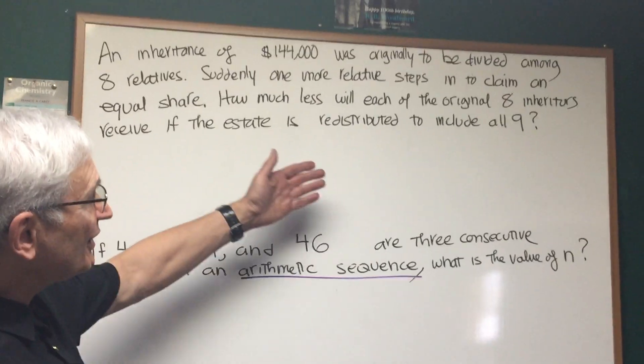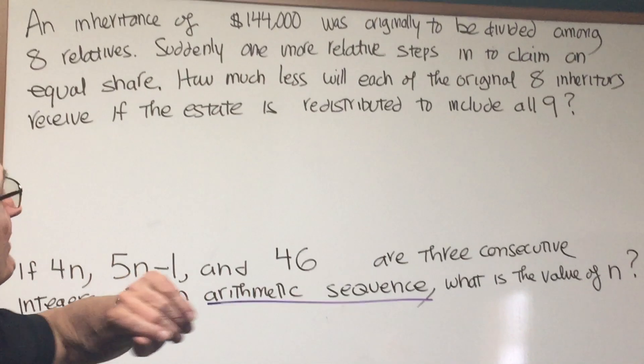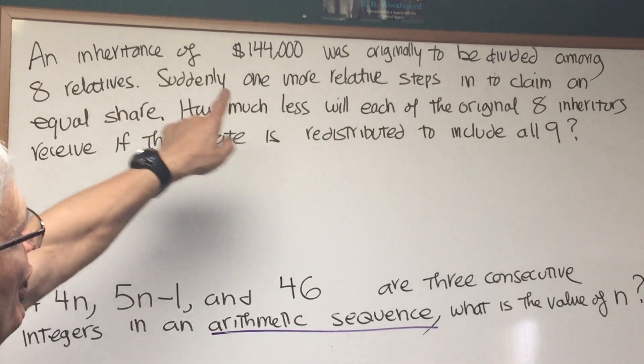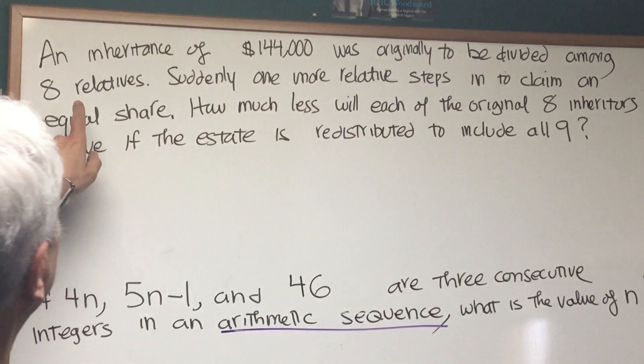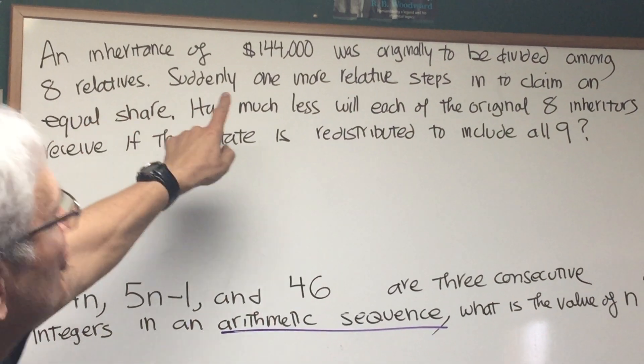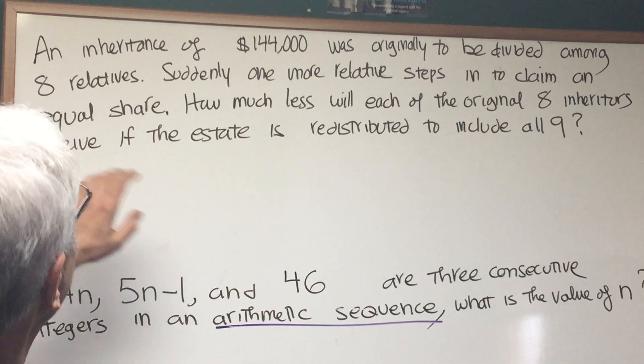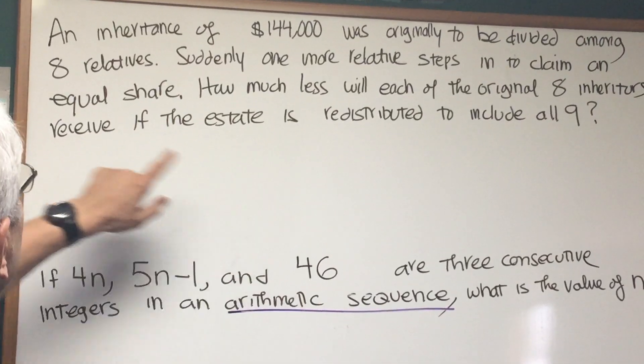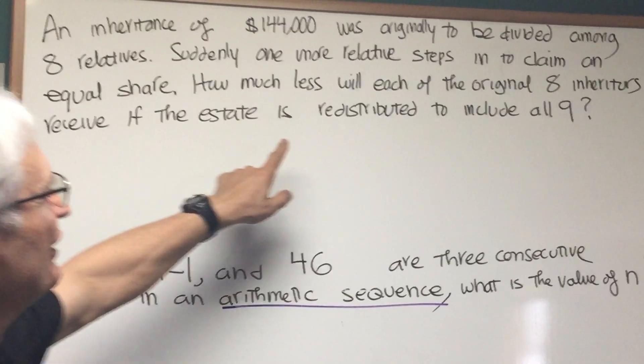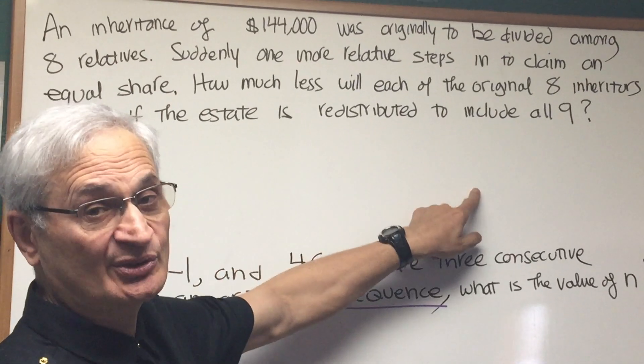Sure, Professor Blois here. Let's read the first of these word problems together. An inheritance of $144,000 was originally to be divided among eight relatives. Suddenly, one more relative steps in to claim an equal share. How much less will each of the original eight inheritors receive if the estate is redistributed to include all nine?